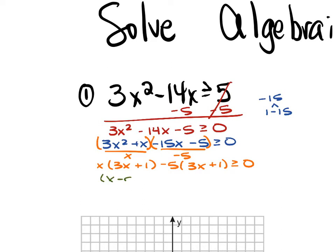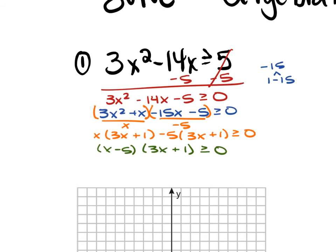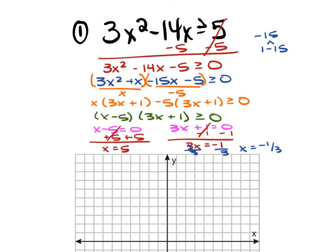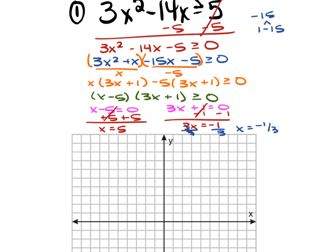From here we're going to have (x minus 5) times (3x plus 1). When you solve both of these for x, you're going to set x minus 5 equal to 0 and 3x plus 1 equal to 0. Remember, we turn that inequality into an equation and treat it like an equation. Moving the 5 over gives x equals 5. Moving the 1 over gives 3x equals negative 1, then dividing by 3 gives x equals negative one-third. These two x-values are your x-intercepts — ordered pairs at (5, 0) and (negative one-third, 0).